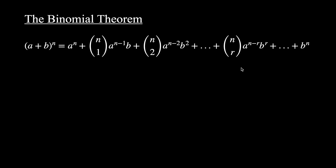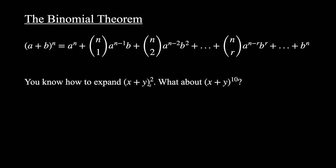Why is the binomial theorem useful? This is pretty easy to see with an example. You know how to expand things like (x + y)². This is a binomial because it has two terms, and to expand those brackets you would write the two brackets and then use FOIL — multiply everything out — and you get x² + 2xy + y². But what about something like (x + y)^10 or (x + y)^15, 20, or 100?